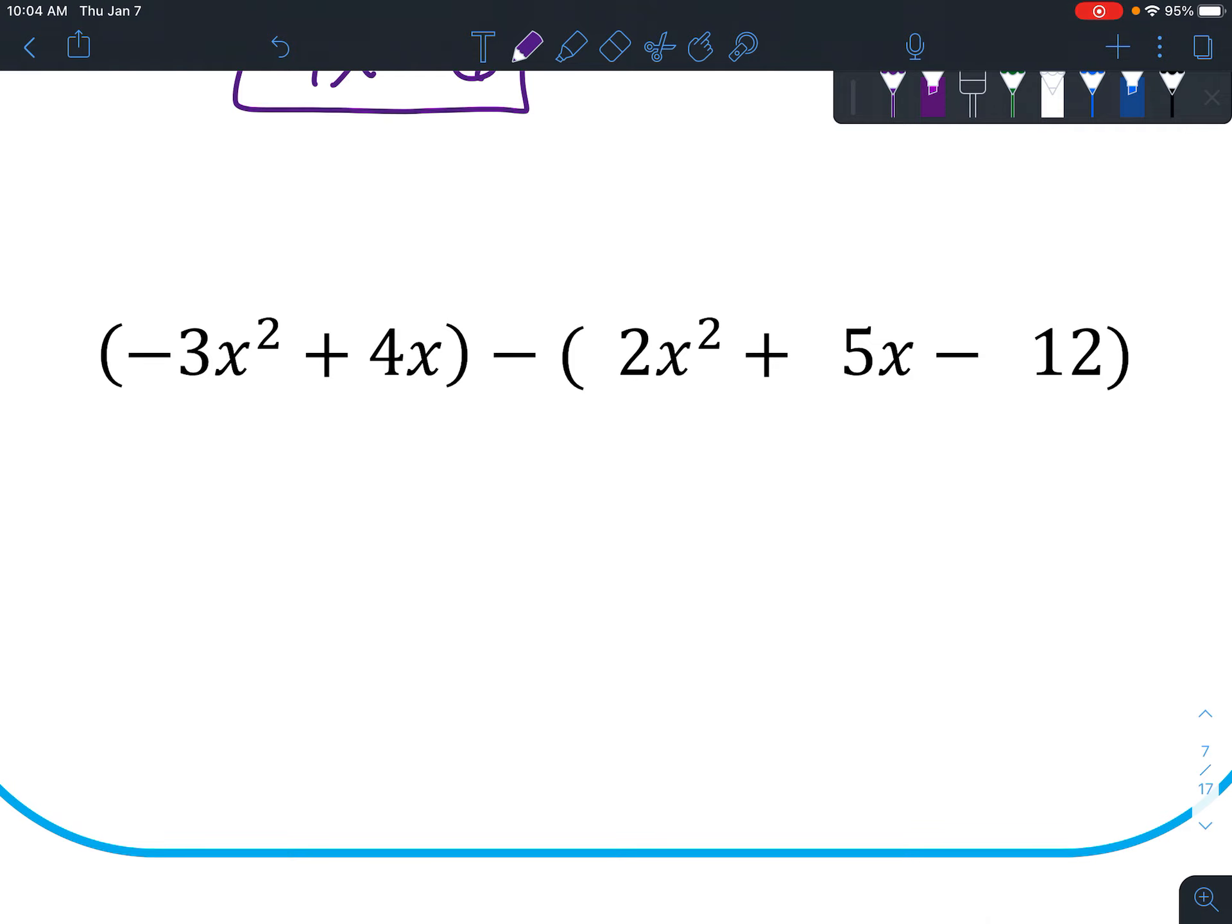We're going to do our last example. So change this to add the opposite. So we've got add the opposite, the opposite, the opposite. And this time, since our terms don't exactly match up, you might want to actually put this one underneath here. It doesn't really matter which one you put underneath. That way they're all lined up and you've got a place for everything.